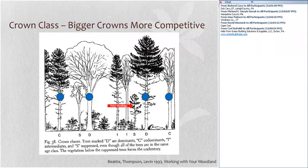The blue dots indicate upper crown class trees — codominant and dominant. Trees marked in red are intermediate and suppressed trees. If we think back to shade tolerance categories — intolerant, mid-tolerant, and tolerant — we would only find shade-intolerant species in upper crown class positions, at least surviving for very long. You might find mid-tolerant and shade-tolerant species in lower crown class positions.